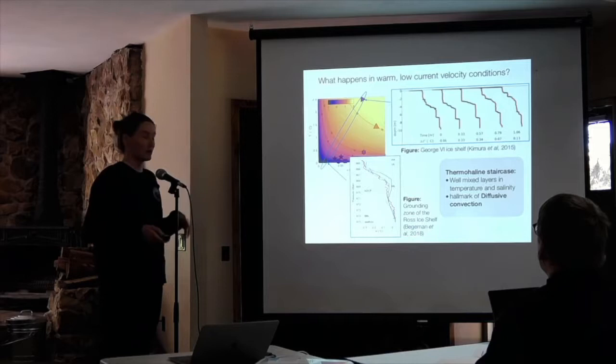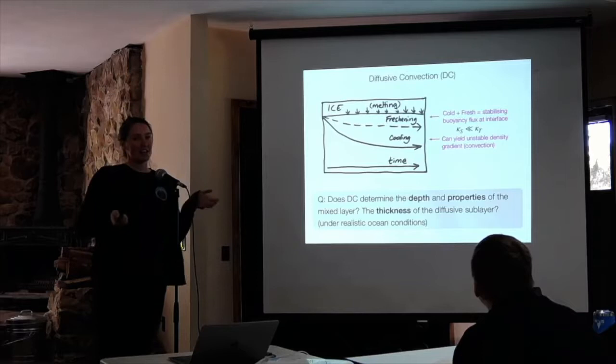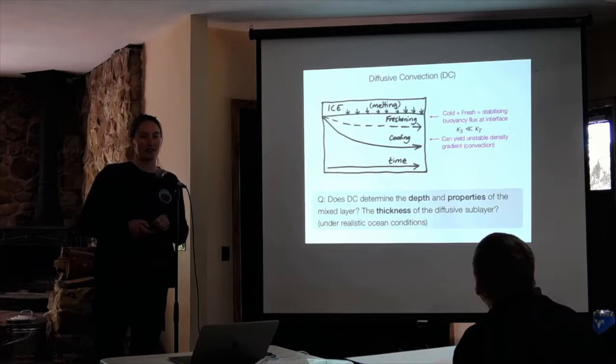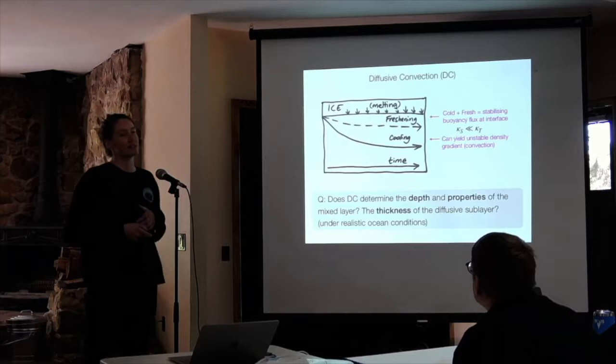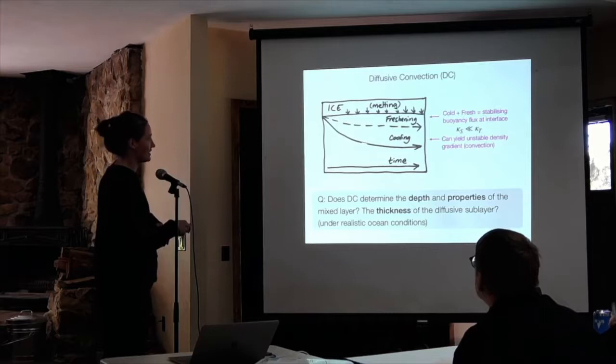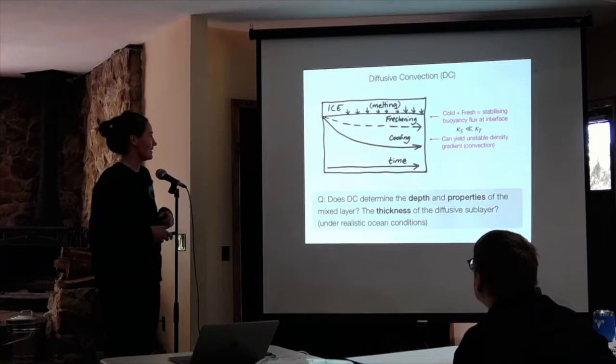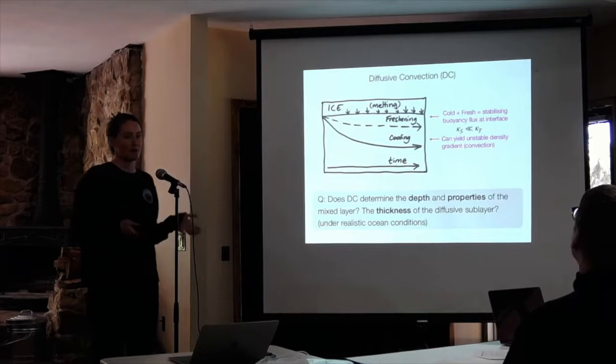In an ice shelf setting, diffusive convection might happen because you have melting at the surface releasing cold, fresh water — a stabilizing buoyancy flux. However, because temperature diffuses much more quickly than salt, you can end up with a region where the cooling signal has outpaced the freshening signal, and locally you might get an unstable density gradient and some mixing. The question I've tried to address is: does this process determine the depth and properties of the mixed layer? Does it provide a control on the diffusive sublayer thickness and therefore the melt rate? The short answer is yes.